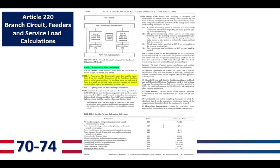Now we're going to move into Article 220. Article 220 is branch circuit feeders and service load calculations. Starting on page 74, middle of the left-hand column, just below the graphic, we've got Part 2, Branch Circuit Load Calculations.